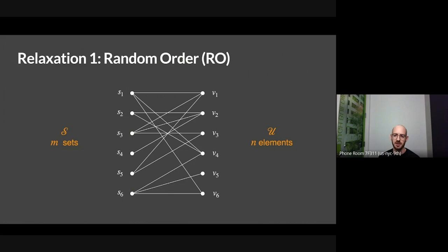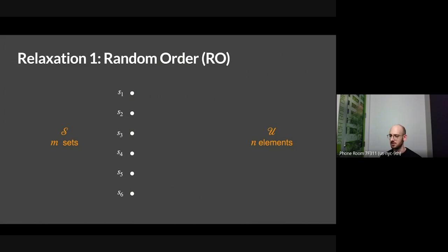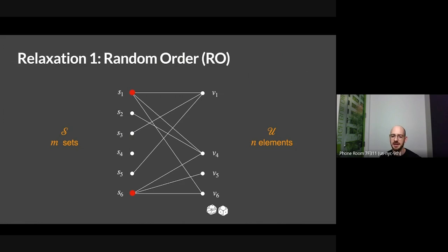Let me give you two reasonable models. One relaxation is the random order model. In this model, the adversary ahead of time fixes the adjacency structure — it's unknown to us — but it's fixed ahead of time. Then the adversary is forced to roll some dice and reveal the right-hand side in uniformly random order. So we play the same online set cover game, only in uniform random order.